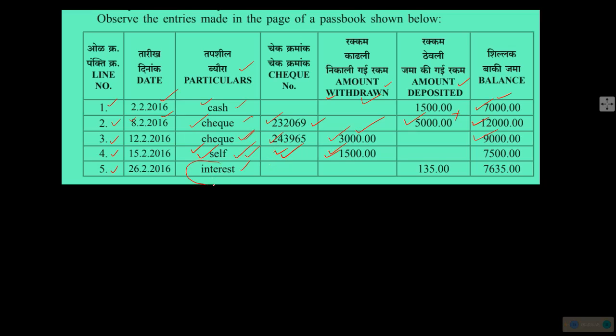The last entry is interest. As you are keeping money in the bank — now it is 7,500, sometimes more, sometimes less — the bank is utilizing and investing that money, making money out of it by giving it as loans to others. So we get a kind of interest against it; a particular percentage is given to us. Here, 135 rupees is deposited into our account by the bank as interest — no person gave it to you, the bank paid it.